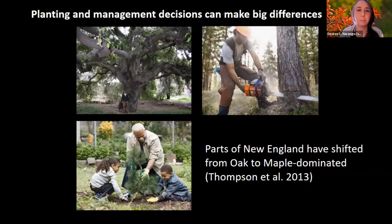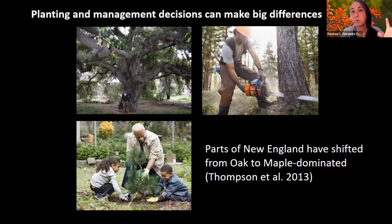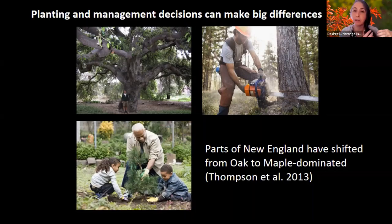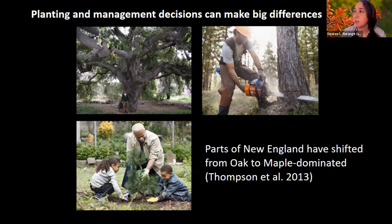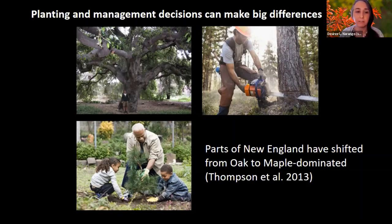In parts of New England, tree communities have shifted dramatically from a primarily oak-dominated forest to one that is now maple-dominated since European colonization. Oaks are now down to only 10% of the forest throughout the region. These changes to forest communities have important implications for wildlife habitat, but we've really only scratched the surface of the importance of individual tree species to these relationships.